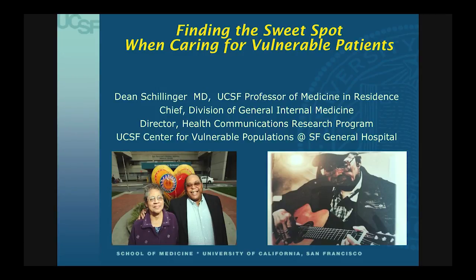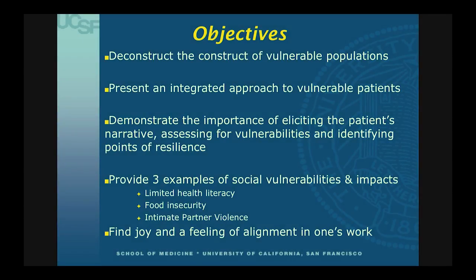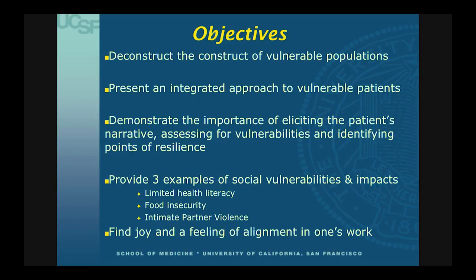I'd like to take the next 20 minutes talking about this integration of the social determinants of health into the office encounter, into the care we provide for patients. The objectives of my talk are to deconstruct the construct of vulnerable populations — what does that even mean? — present an approach that integrates social determinants of health with health care to reduce health care disparities for vulnerable patients, and highlight the importance of eliciting the patient's story. By listening carefully and mindfully, one can assess social vulnerabilities and identify points of resilience that can be the secrets to providing better quality care.